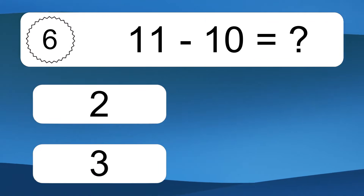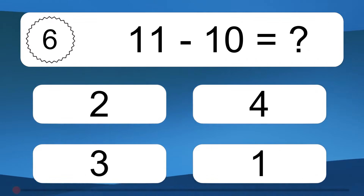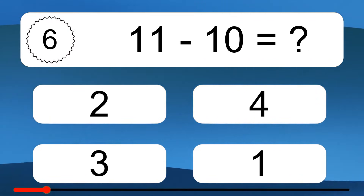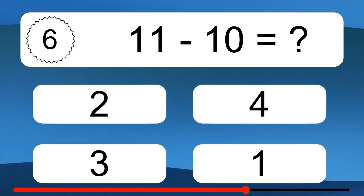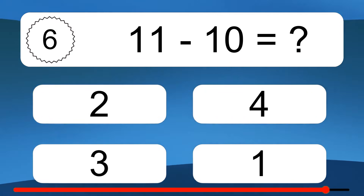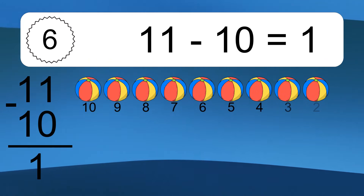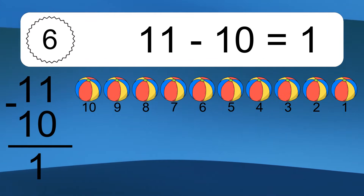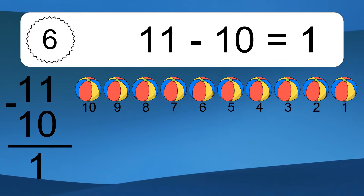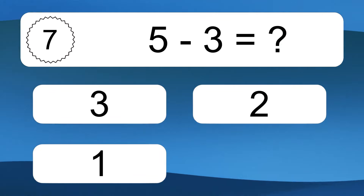11 minus 10 equals what? 11 minus 10 equals 1. Let's count it: 10, 9, 8, 7, 6, 5, 4, 3, 2, 1.